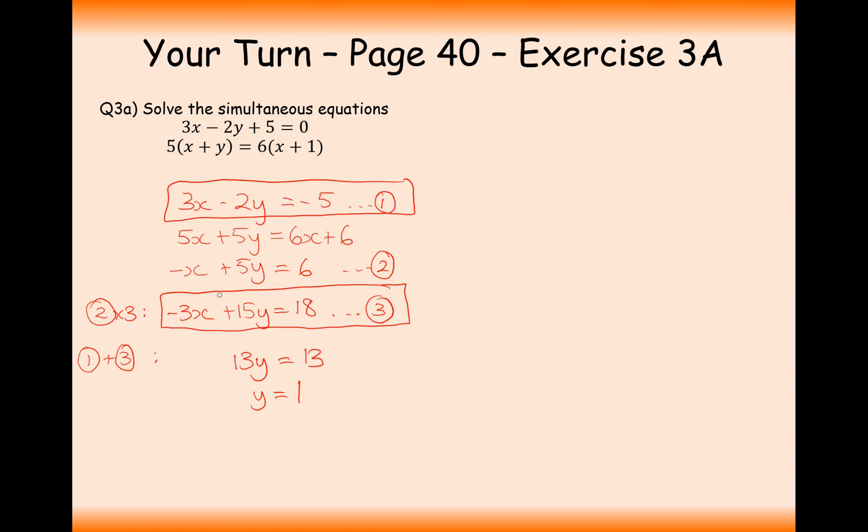Substituting that into one of the equations, I'll choose equation 2. Minus x plus 5 equals 6, add this x on to the other side, take away the 6 and you get minus 1 equals x. So there's my answer, x is minus 1, y is 1.